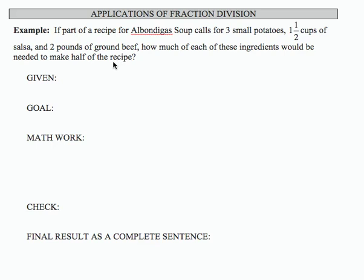So what we're going to end up doing is dividing each of the ingredient amounts by two, but let's start by writing out the ingredients that we have present. So we have three potatoes, one and a half cups of salsa, and two pounds of ground beef. Our goal is to cut the recipe in half.